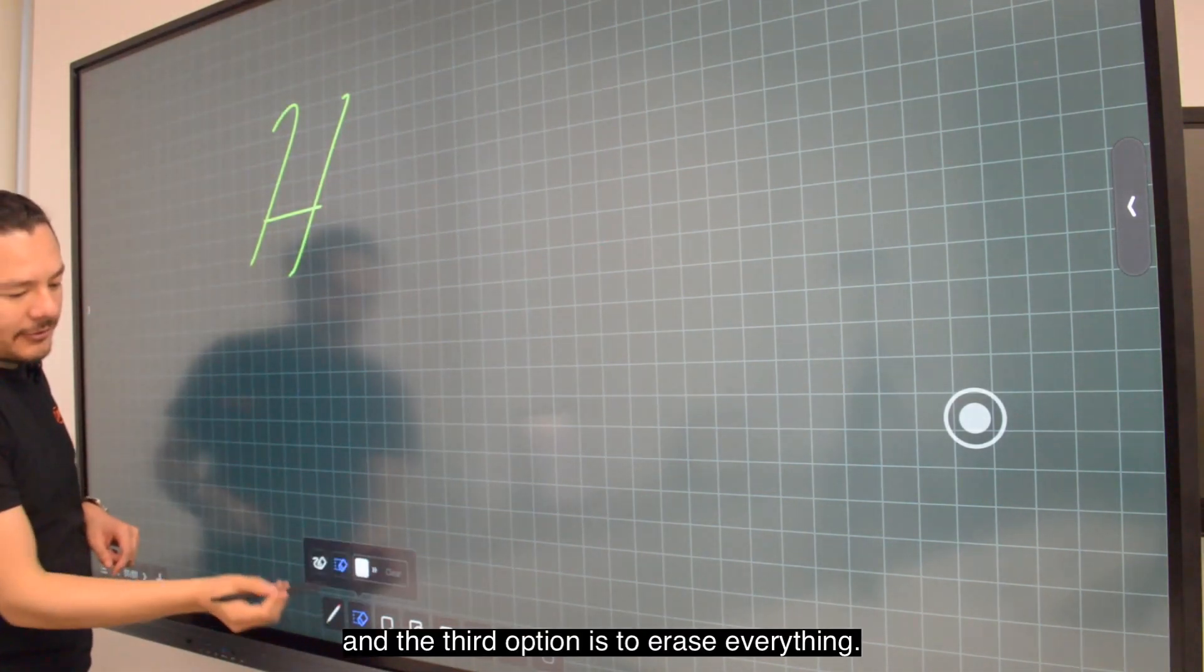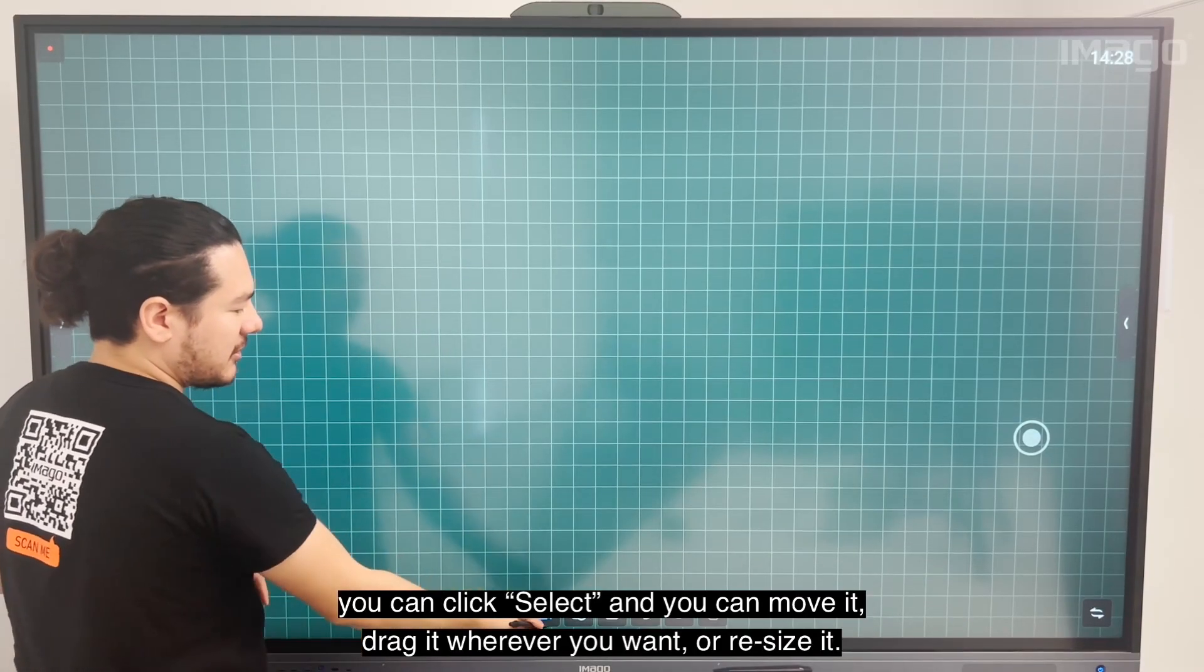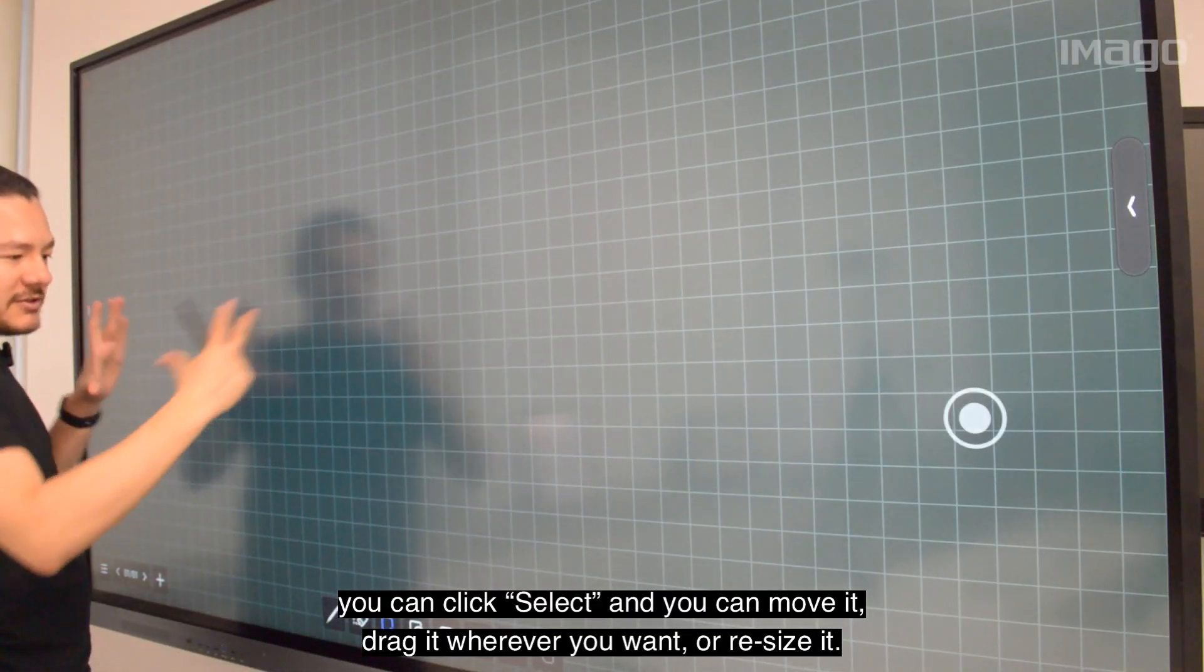Now we have Select. When you have shapes, text, or objects, you can click here to select and you can move it, drag it, whatever you want, or resize it.